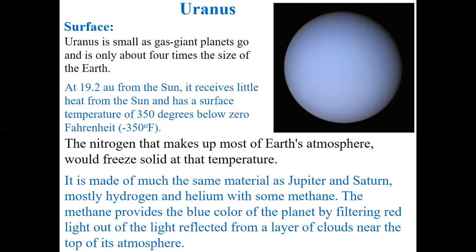Uranus is about four times the size of Earth. It's located 19.2 astronomical units away from the sun. It receives little heat from the sun and has a surface temperature of 350 degrees below zero, negative 350 Fahrenheit. The nitrogen that makes up most of the atmosphere would freeze solid at this temperature. If Earth goes to this surface temperature, the presence of nitrogen will freeze. In our Earth atmosphere, 78% is nitrogen.